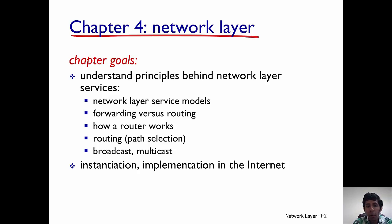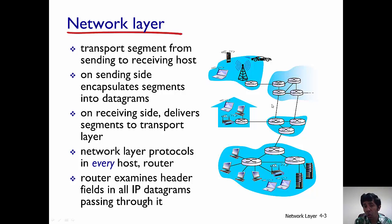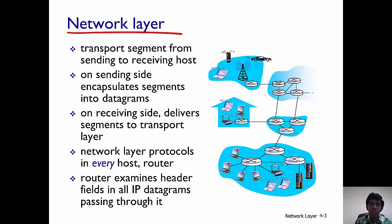The goal of the network layer is to transport segments from one host to the other — transport layer segments all the way from one host to the other. At the sender, the host takes the transport layer segment and encapsulates it into datagrams — that is the terminology used in the network layer. It then sends it over the network, and at the receiving end, it decapsulates the datagram, demultiplexes, and obtains the segments to send up to the transport layer.